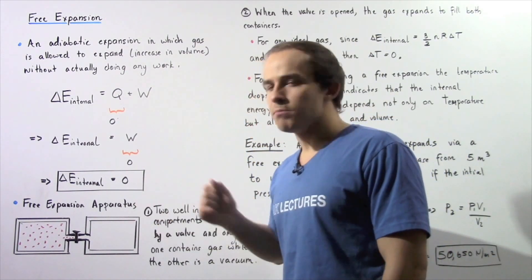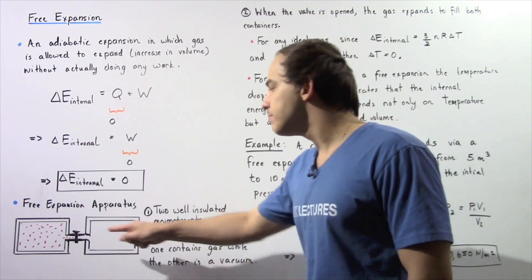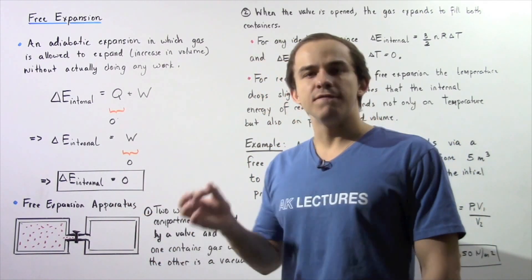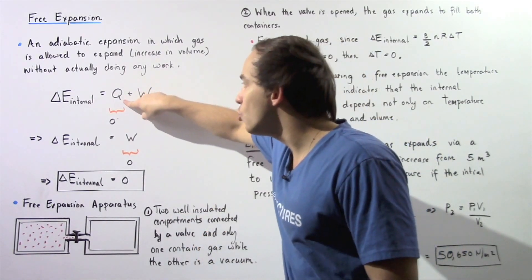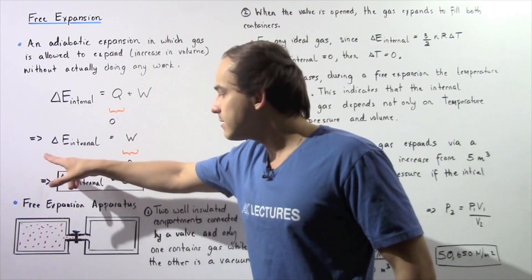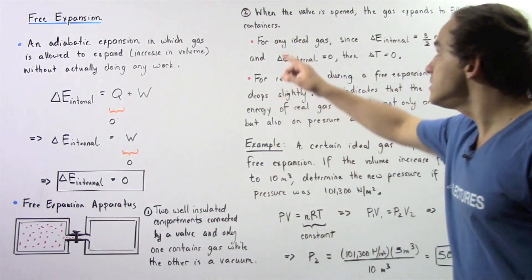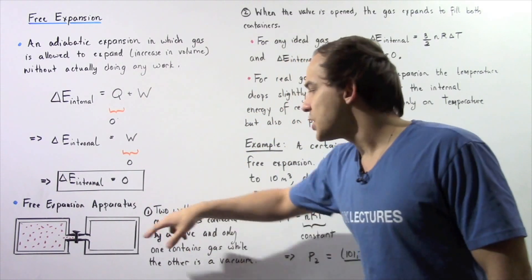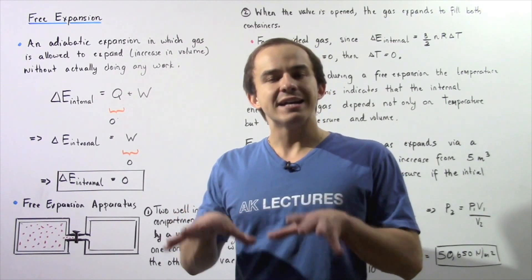Let's examine the free expansion apparatus. It's composed of two well-insulated compartments connected by a valve as shown. One compartment has our gas and the other compartment has a vacuum. The reason we insulate these compartments is because Q should be zero — there should be no transfer of energy between the system and the surroundings as a result of a temperature difference. When we open the valve, our gas expands into the other container, so our volume increases and the pressure of the gas decreases.